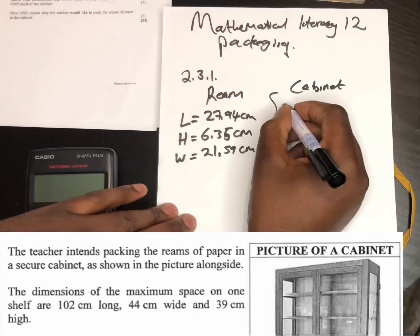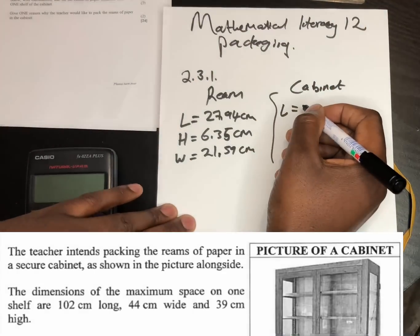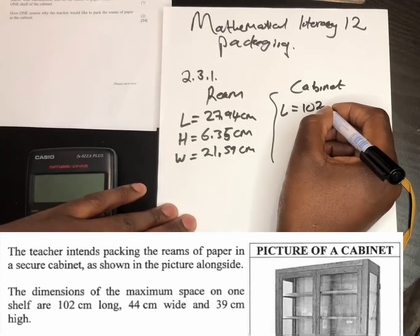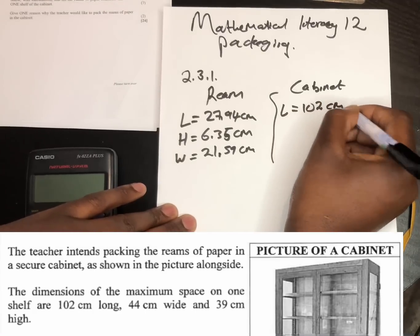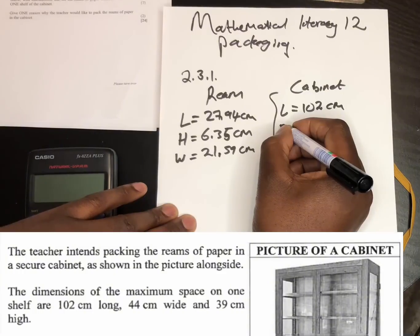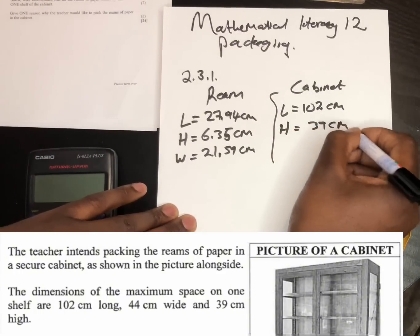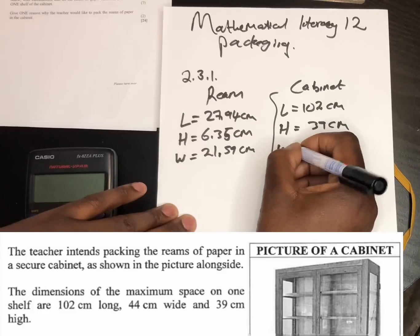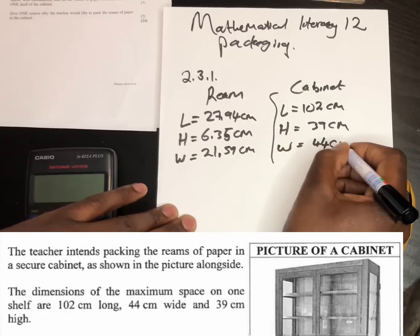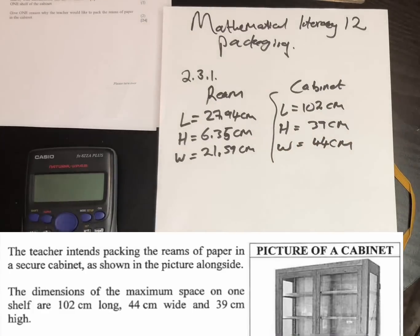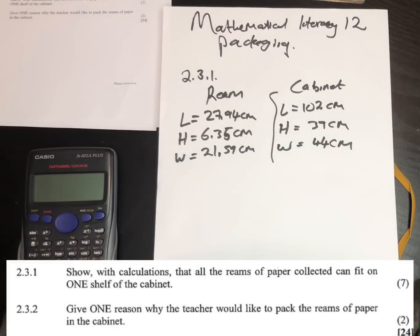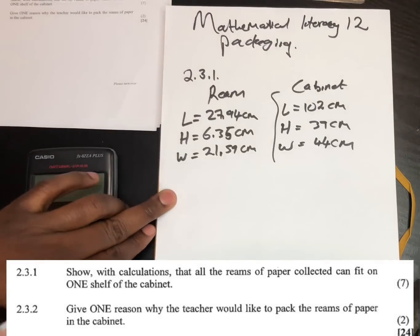Now for the cabinet: the length is 102 centimeters, the height is 39 centimeters, and the width is 44 centimeters. By looking at this, we can see that all measurements are in the same units — centimeters — so there is no need for us to do any conversion. We go straight to the calculations.